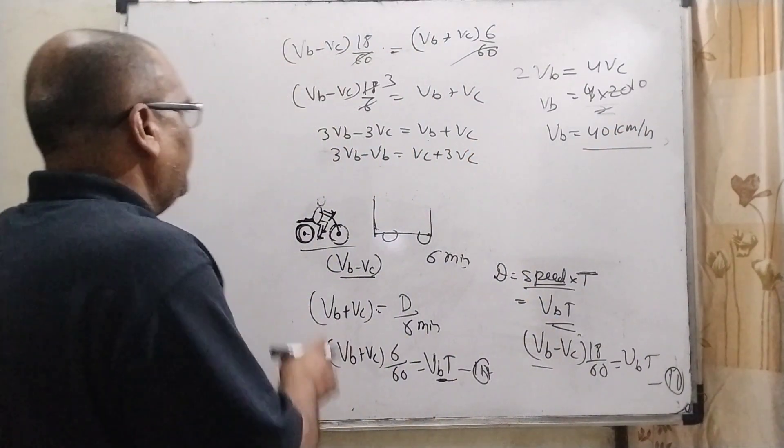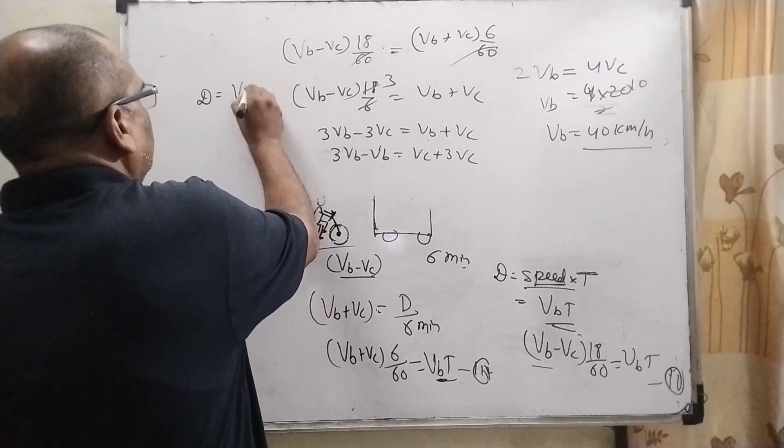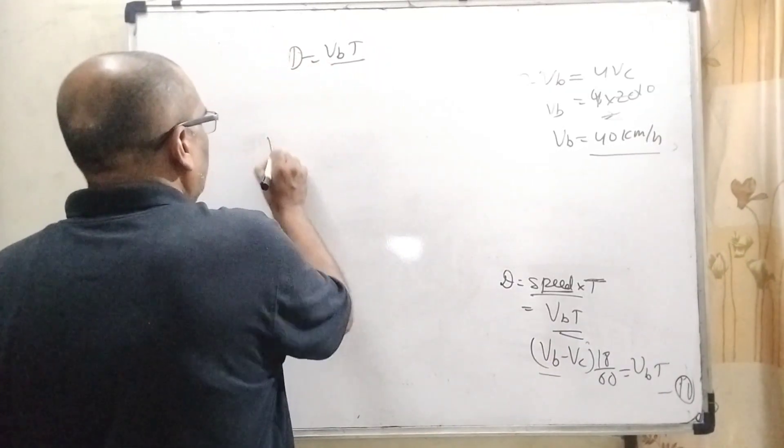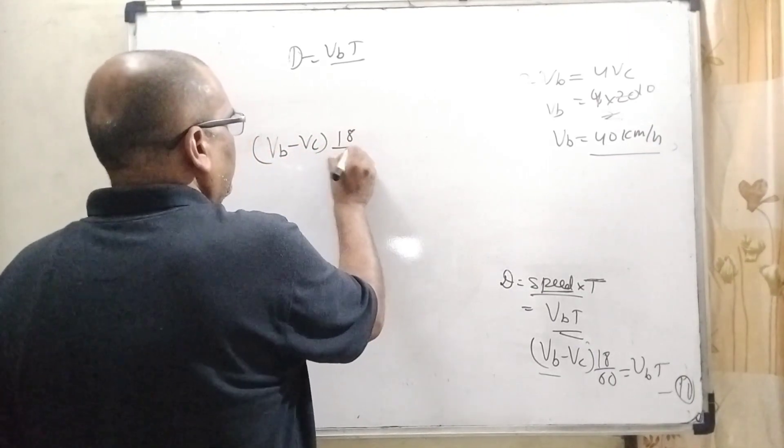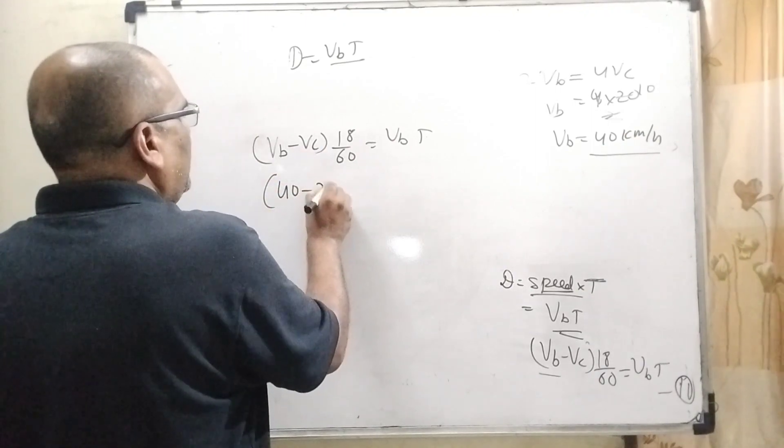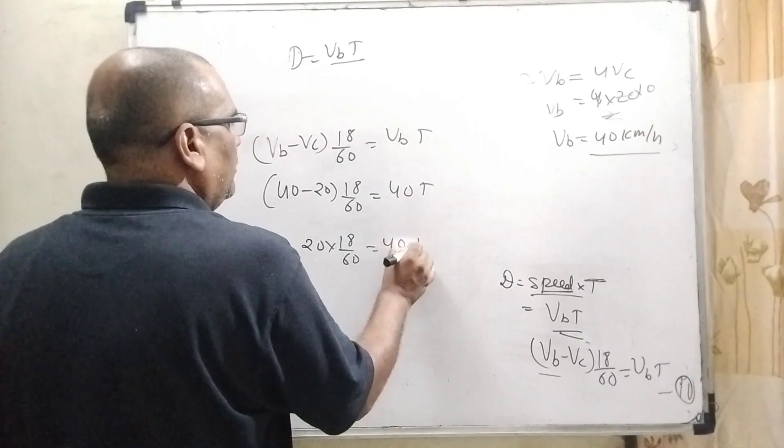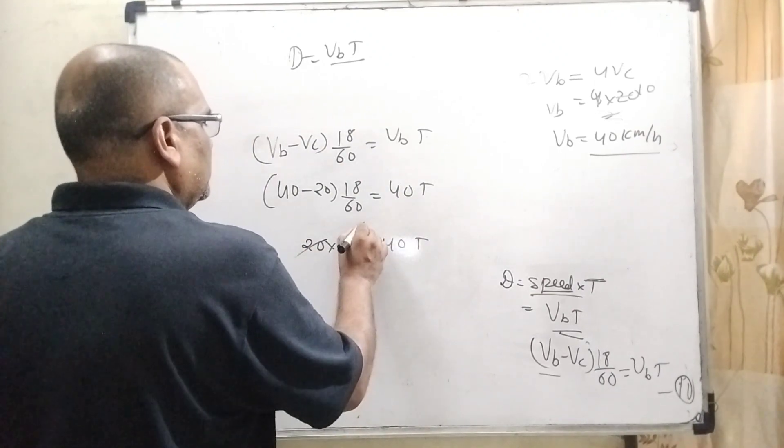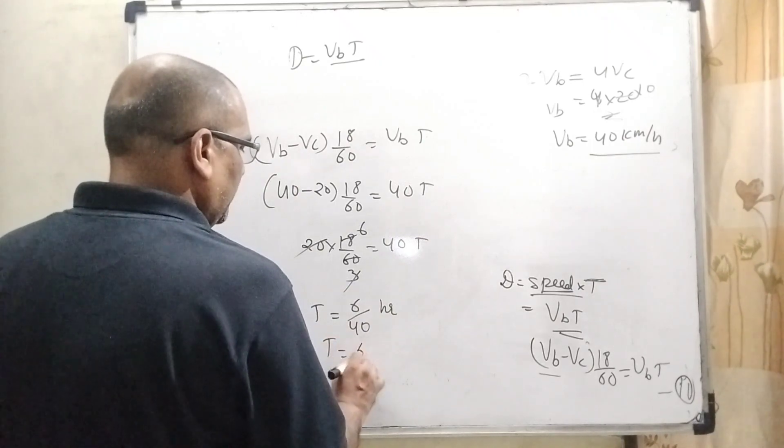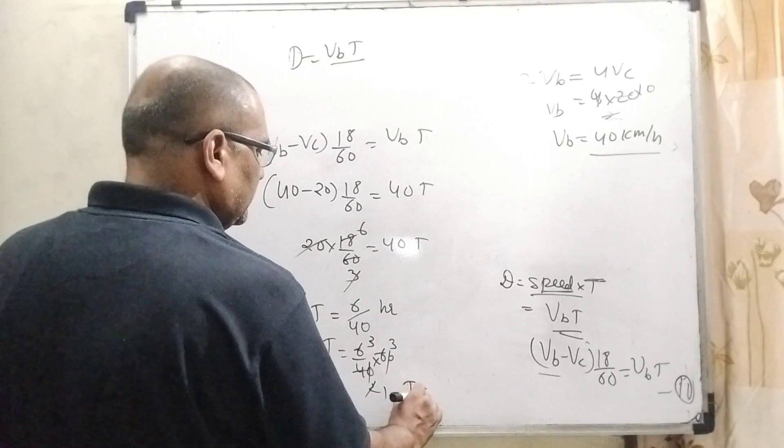Now we have to find out the time period. We have Vb minus Vc 18 by 60 equals Vb into T. Vb is 40 and speed of cyclist is 20. 40 minus 20, that is 20 times 18 by 60 equals 40 into T. 6 by 40 T equals T. This is in hours. Converting to minutes, multiply by 60. Cancel out, and we get T equals 9 minutes.